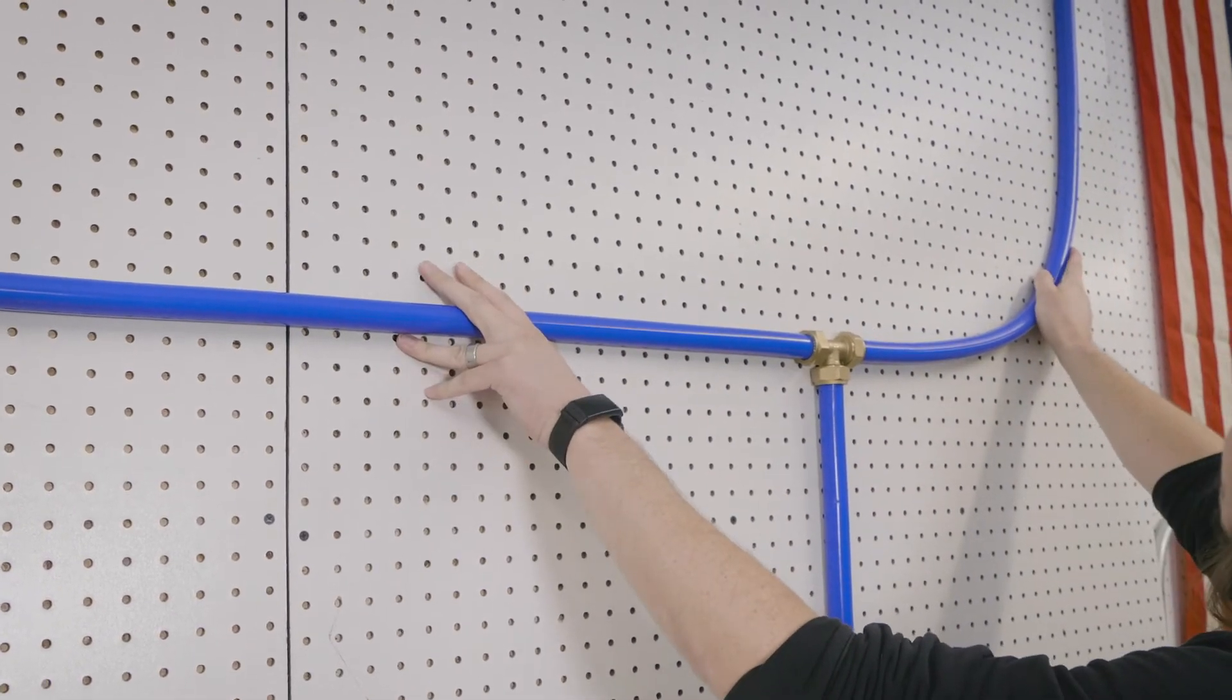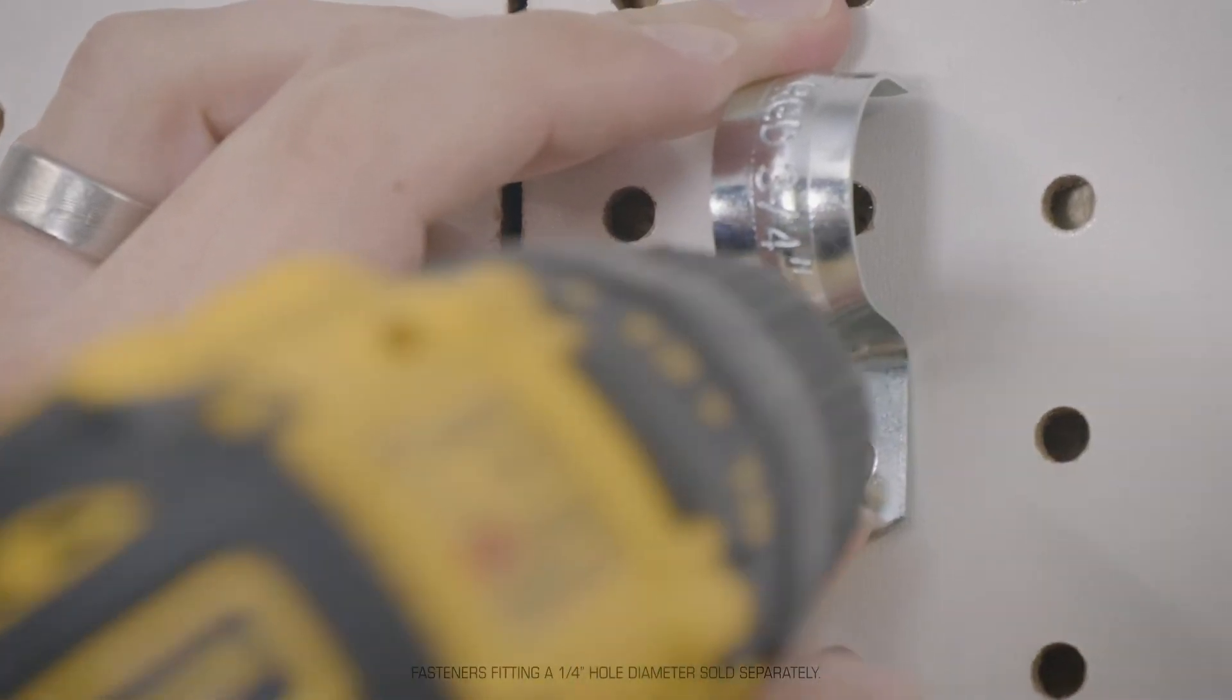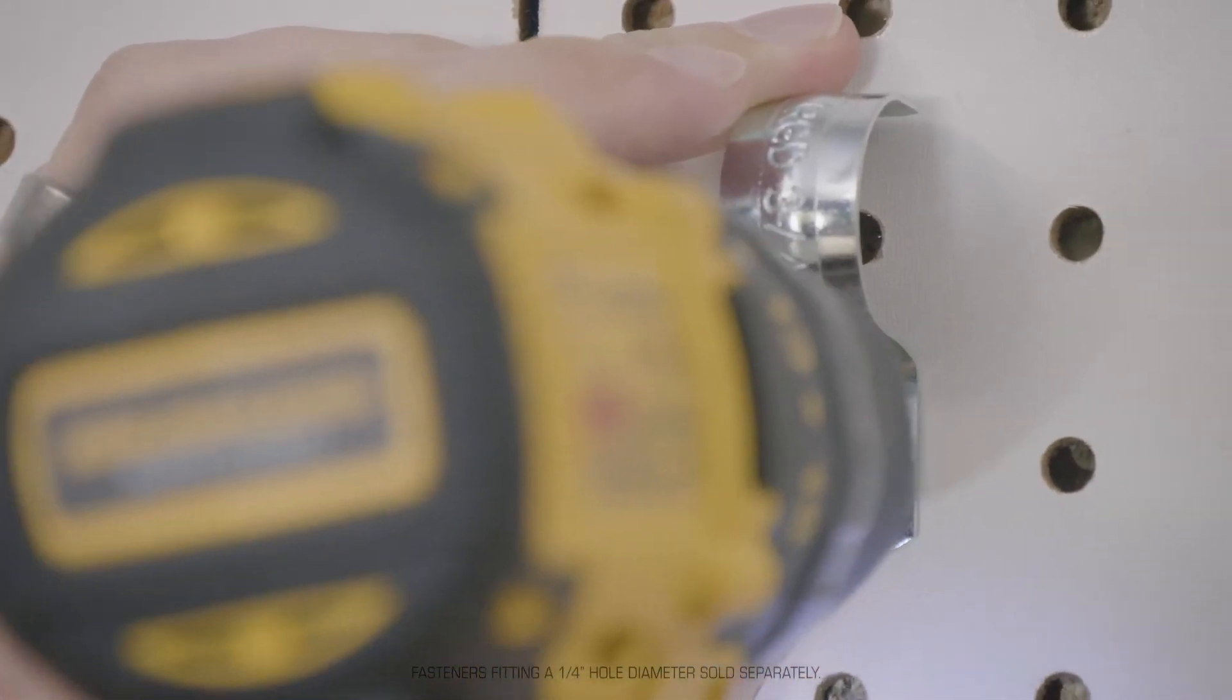After ensuring your desired installation height, fasten the piping to the wall with the supplied steel mounting brackets.